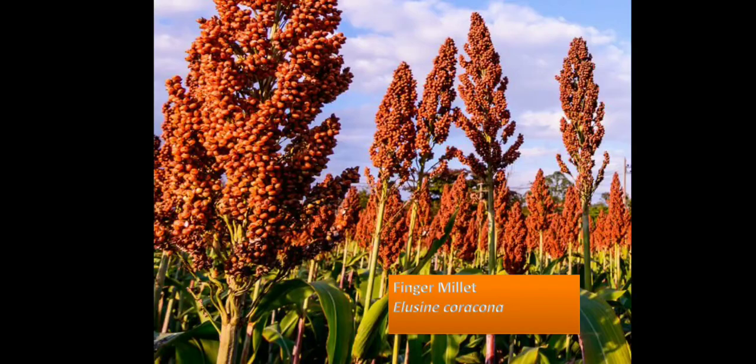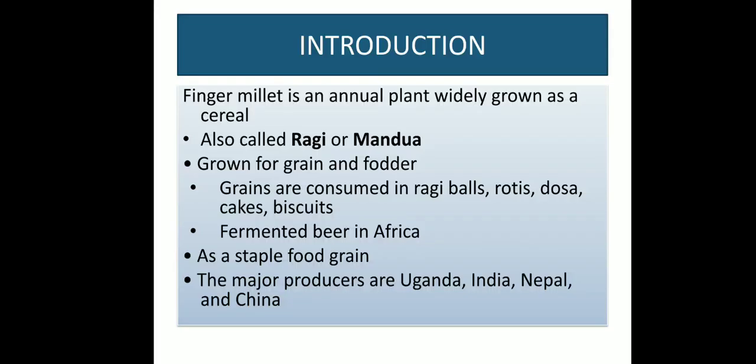Now we discuss about Finger Millets, which comes under the category of Minor Millets. It is scientifically known as Eleusine coracana. Finger Millet is an annual plant widely grown as a cereal. It is also known as Raghi and Mandua. It can be grown for grains and fodder. Its grains are consumed in the form of Raghi balls, rotis, dosa, cakes, biscuits. A fermented beer is also produced by the fermentation of the grain of this crop in Africa.